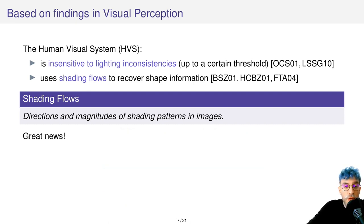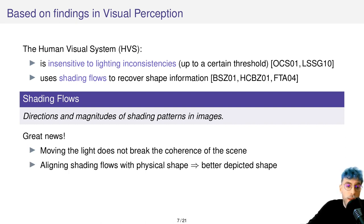All of that is great news for us because it means that we can move the light in the scene without breaking its coherence. And it also means that by moving the light we can maybe better depict the shape of object if we manage to better align the shading flows with the shape flows, with the actual physical shape of the object.